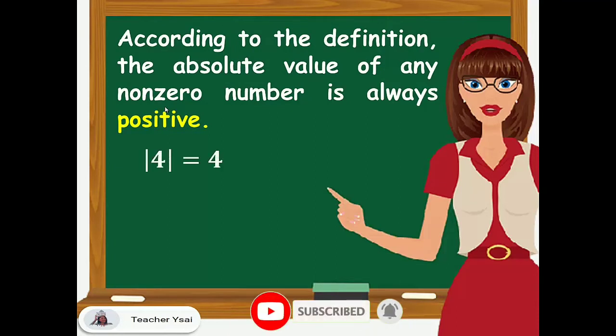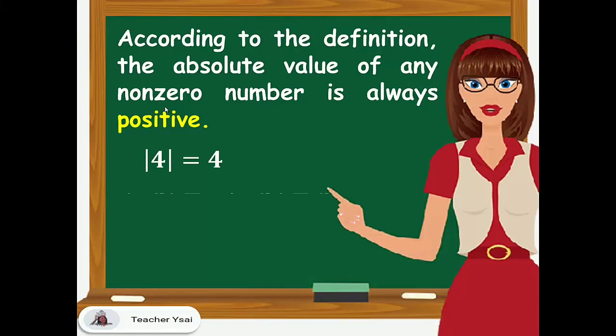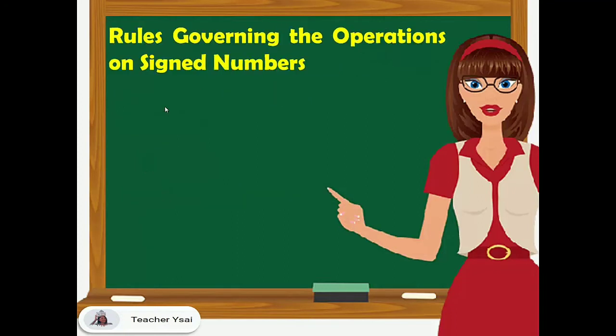For example, the absolute value of 4 is 4, the absolute value of negative 4 is 4, and the absolute value of 0 is 0.